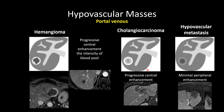For cholangiocarcinoma, there is also progressive enhancement, but that enhancement tends not to follow blood pool. Often in the portal venous phase, that enhancement will be actually less than the aorta. Hypovascular metastases can have variable enhancement — sometimes progressive central enhancement similar to cholangiocarcinoma, other times little to no enhancement. Also note that in this large intrahepatic cholangiocarcinoma, we do see capsular retraction, another classic feature of intrahepatic cholangiocarcinoma.